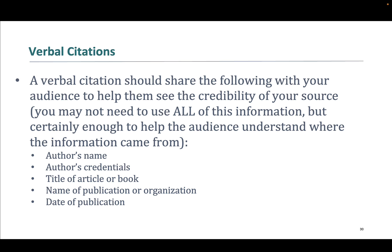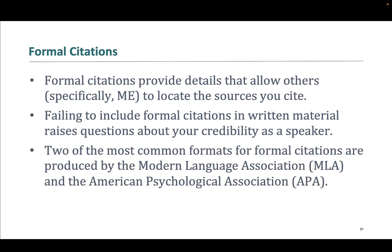There are a couple of things you have to do to avoid committing plagiarism. One is verbally citing your sources while you're actually speaking. When you get to the part of the speech where you're providing information from a source, you need to tell us — give us enough information so we have an understanding of where this piece of information came from. Just saying someone's name isn't enough if we don't know who that person is. Just saying the name of an article isn't enough if we don't know the journal or magazine that published it. You also need to have formal citations — they should be on the last page of your outline. Formal citations provide details that allow others to locate the sources, and failing to include them raises questions about your credibility.